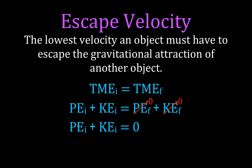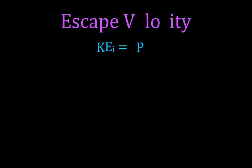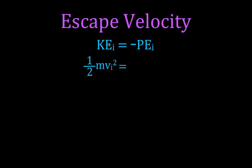I'm going to subtract the initial potential energy from both sides, and I get that the initial kinetic is equal to minus — don't forget the minus sign, this is very important — minus the initial potential. We have our initial kinetic energy, the lowest possible velocity, and inside there is the velocity, because kinetic energy is one-half mv squared. That velocity is the escape velocity. That's equal to minus, and now this minus combined with the minus in the potential energy equation — minus G times m1 times m2 divided by r.